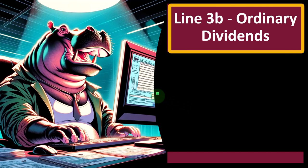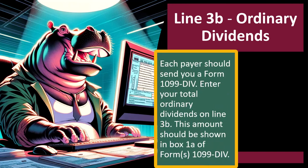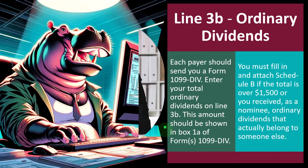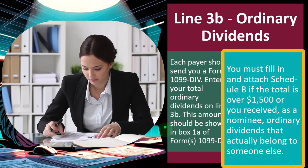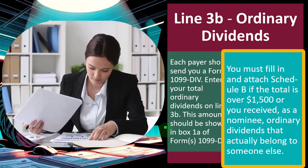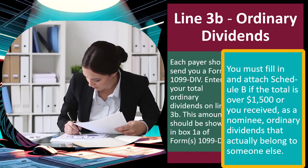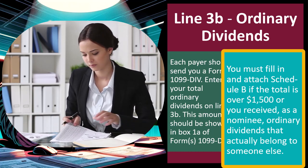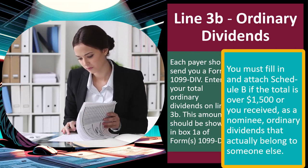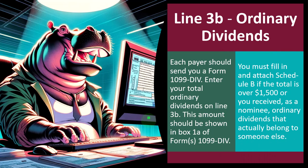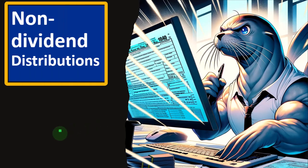Line 3B — ordinary dividends: each payer should send you a Form 1099-DIV. Enter your total ordinary dividends on line 3B; this amount should be shown in box 1A of Form 1099-DIV. You must fill in and attach Schedule B if the total is over $1,500, or if you received as a nominee ordinary dividends that actually belong to someone else — in which case you report them and then show the negative amount on Schedule B, even if under the threshold.